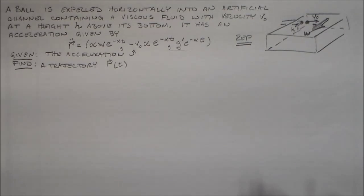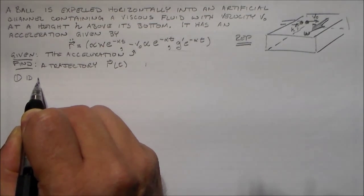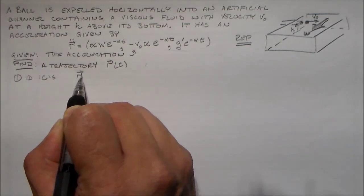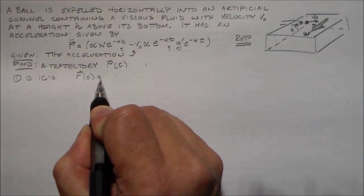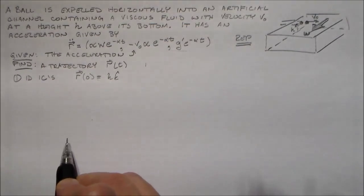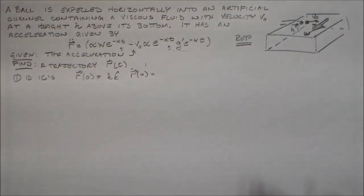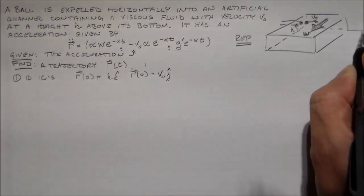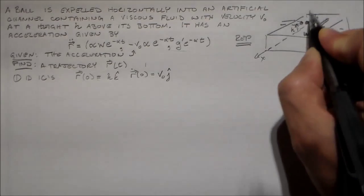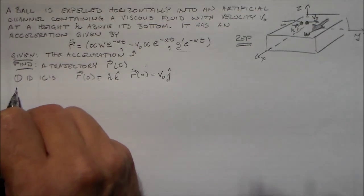Anyways, I want to find this trajectory and I just want to find it by integration. The first thing I want to do is identify my initial conditions. So, ID the ICs: the initial position is going to be some height h in the k-hat direction, and the initial speed, r-dot of 0, is going to be v₀ in the j-hat direction. So this is going to be the y-axis, this is going to be the x-axis, and this is going to be the z-axis — i, j, k. Alright, so I've got my initial conditions.